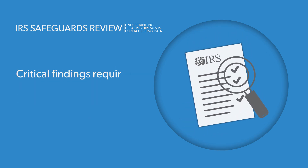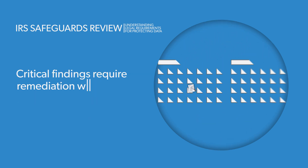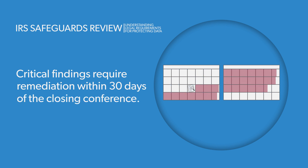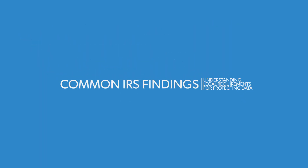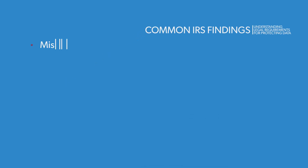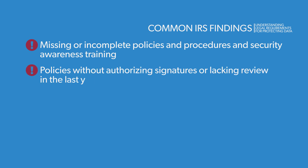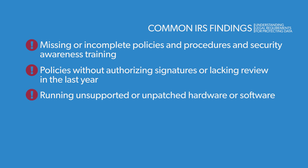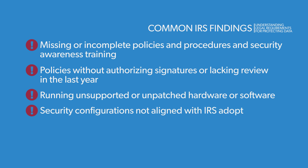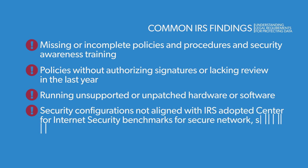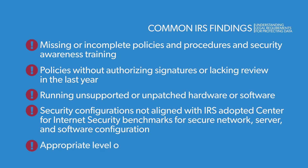Critical findings from the review take top priority and require remediation within 30 days of the closing conference. Common IRS findings include, but are not limited to: missing or incomplete policies and procedures and security awareness training; policies without authorizing signatures or lacking review in the last year; running unsupported or unpatched hardware or software; security configurations not aligned with IRS-adopted Center for Internet Security benchmarks for secure network, server, and software configuration; and appropriate level of encryption not enforced.